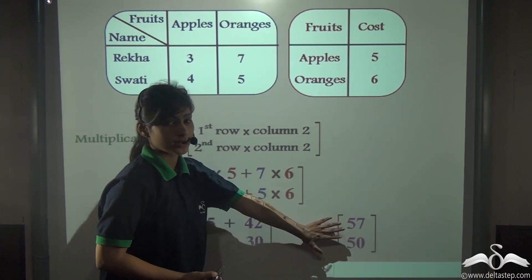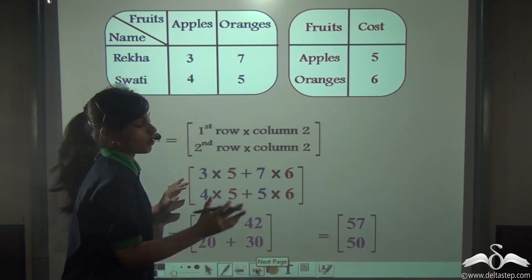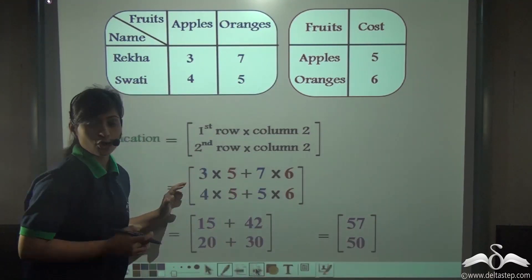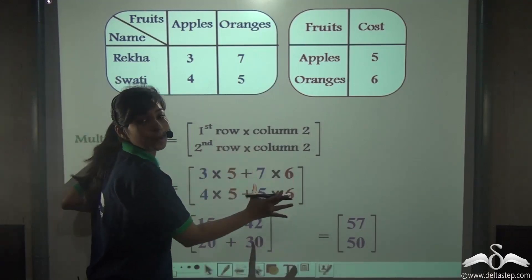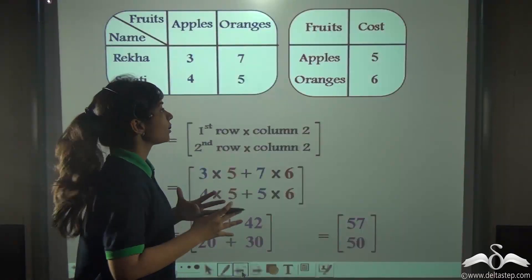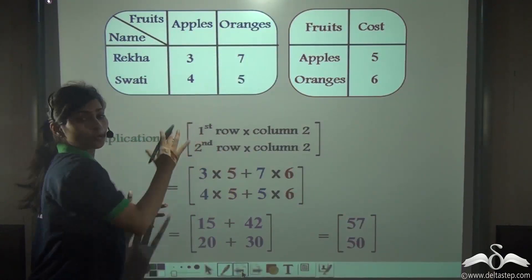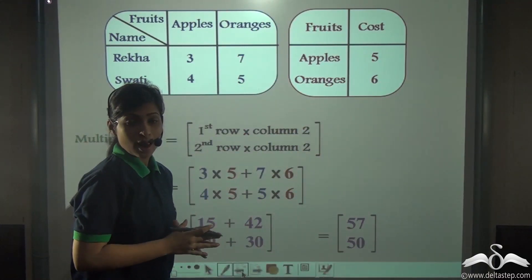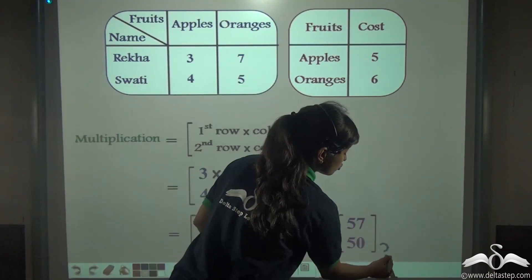The final answer is 57 and 50. So Rekha spent 57 rupees on fruits while Swati spent 50 rupees on fruits. In that way you could work with the data and also learnt how to multiply two matrices. Did you notice? The first matrix was of order 2 by 2, the second was of order 2 by 1, and the product came out of order 2 by 1.